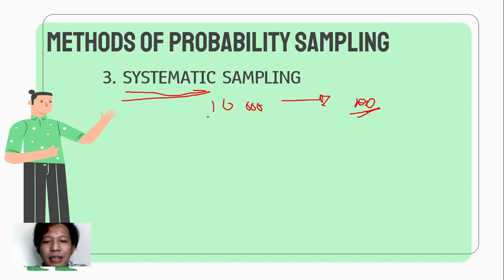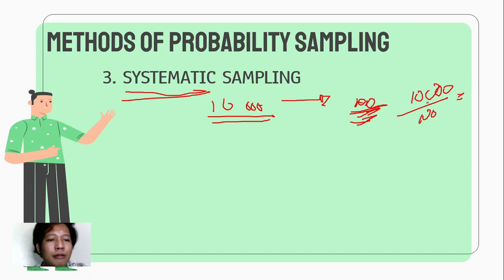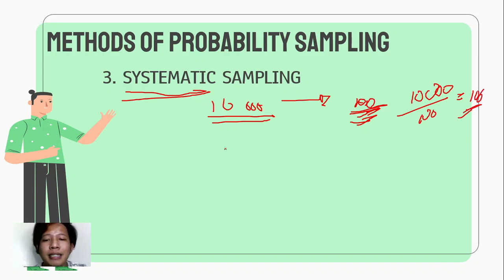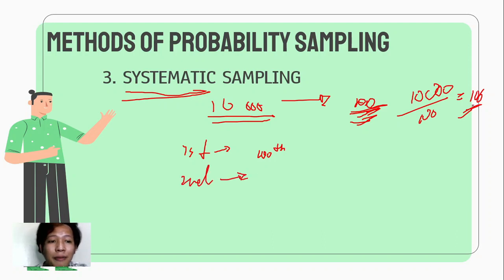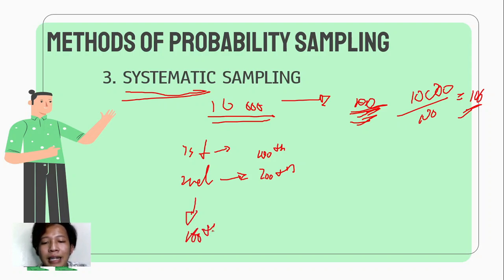Paano natin makokomplete yun? If this is your population and this is your expected sample, we have population divided by sample size: 10,000 divided by 100 = 100. So para magamit mo yung systematic sampling, yung first respondent mo would be the 100th person na papasok sa mall. Tapos yung second sample, kada 100 — so the 200th person, and so on and so forth, hanggang makakuha ka ng 100 tao. That is what we call systematic sampling.